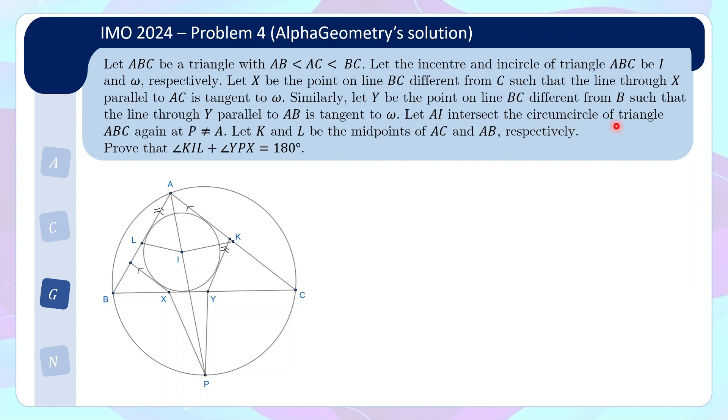Let AI intersect the circumcircle of triangle ABC again at P. So AI intersects here at P. And let K and L be midpoints of AC and AB respectively. So here, midpoint K, midpoint L. Prove that angle KIL plus angle YPX equals 180 degrees.